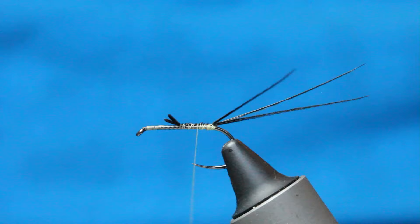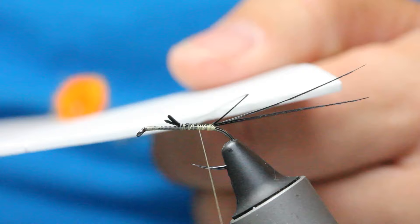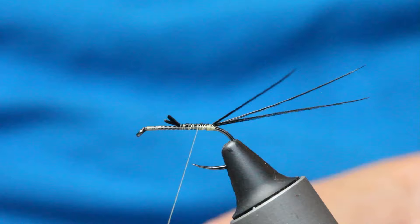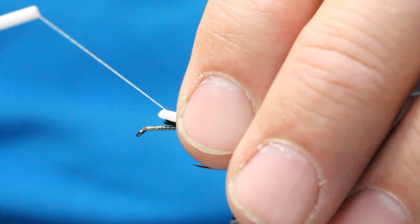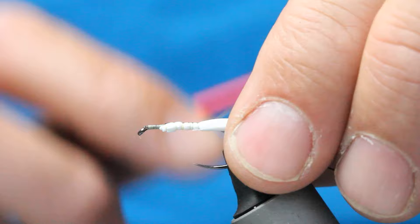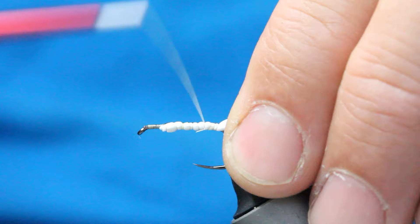The next thing I've got is closed cell foam, craft foam. You just want to take yourself a sliver off of that, maybe about three mil thick. All we do is come in on any side of the hook shank, and tie it in right up to the tails, and just make sure it's nice and even.